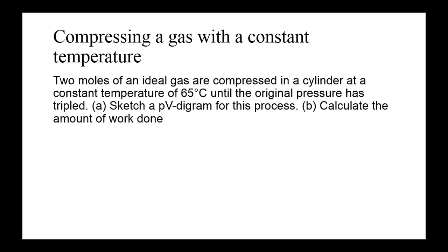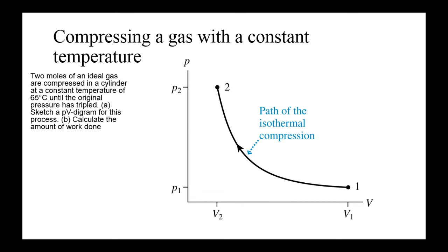Now let's look at another example: compressing a gas at constant temperature. Again we have 2 moles at a constant temperature of 65°C. We want to know the work done going from the original pressure up to triple the pressure. First, we sketch the PV diagram. This curve is known as an isotherm — it shows the path an ideal gas takes at constant temperature. The isotherm curves from the initial state to the final state where P2 = 3P1, so we're tripling the pressure.